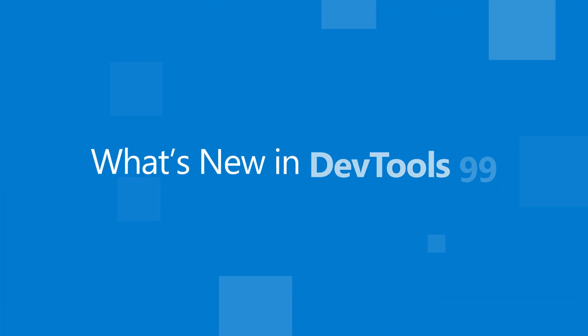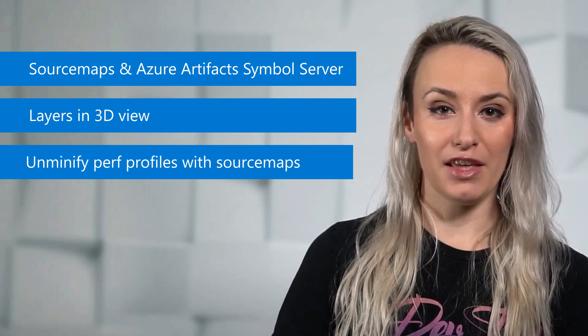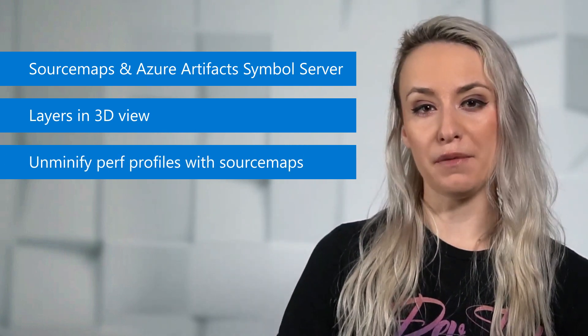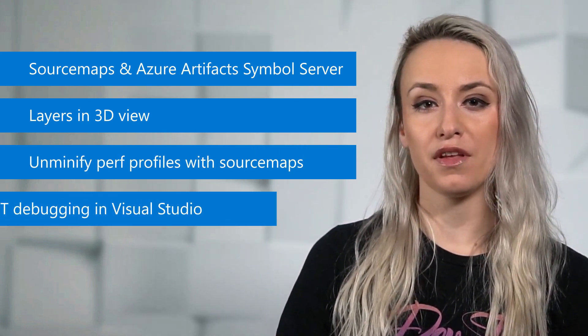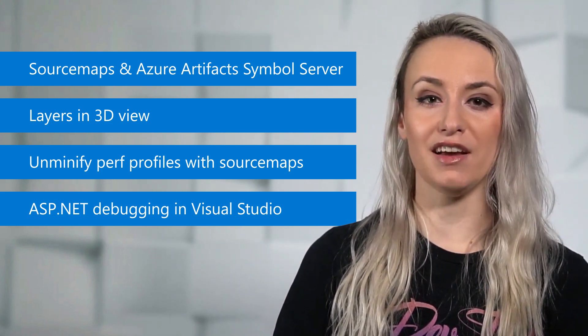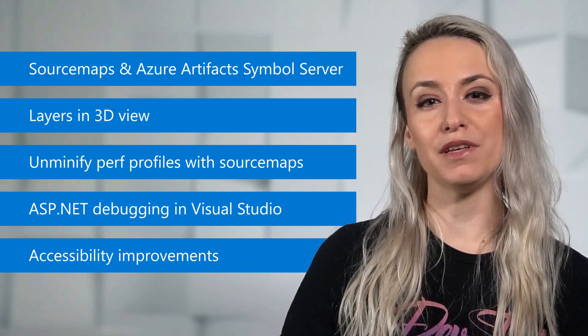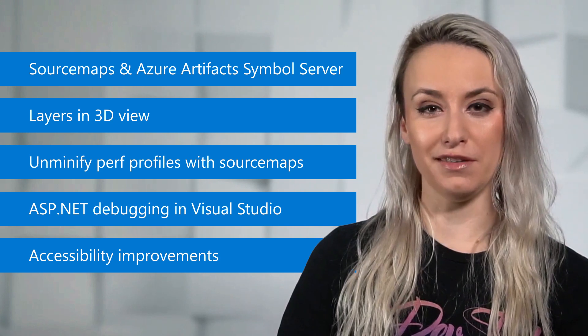Hi everyone. My name is Stephanie and this is what's new in the Microsoft Edge developer tools in version 99. In version 99: debug your production code with source maps from Azure Artifacts Symbol Server; Layers is now in the 3D View tool; you can use your source maps to unminify performance profiles; the Edge developer tools extension for Visual Studio now supports live debugging of your ASP.NET project; and we've improved the accessibility of the network console and 3D View tools.